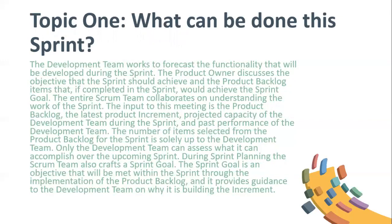The input to this meeting is the product backlog, the latest product increment, projected capacity of the development team during the sprint, and past performance of the development team. The number of items selected from the product backlog for the sprint is solely up to the development team — only the development team can assess what it can accomplish over the upcoming sprint. During sprint planning, the Scrum team also crafts a sprint goal. The sprint goal is an objective that will be met within the sprint through the implementation of the product backlog, and it provides guidance to the development team on why it is building the increment.